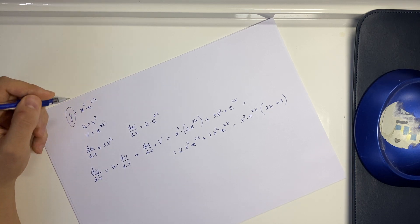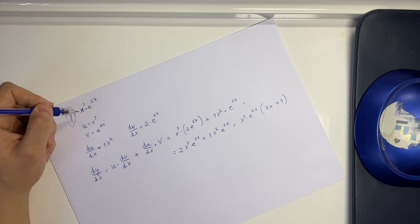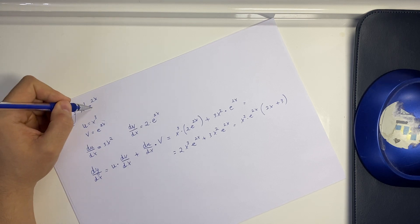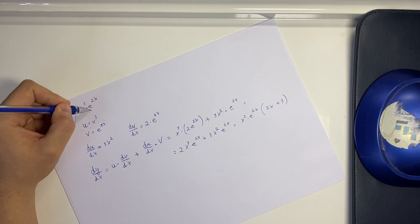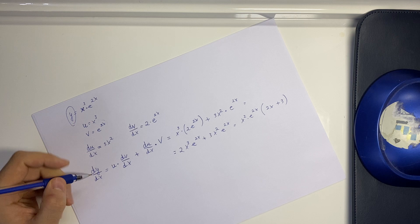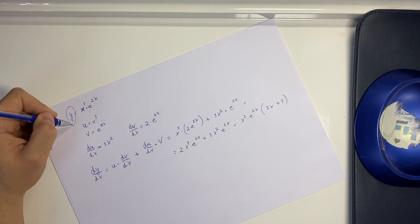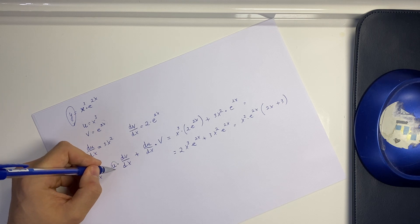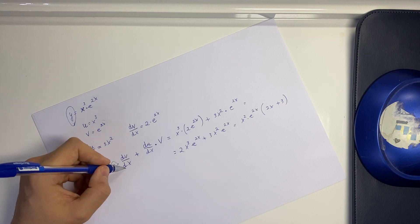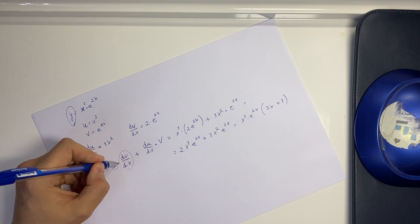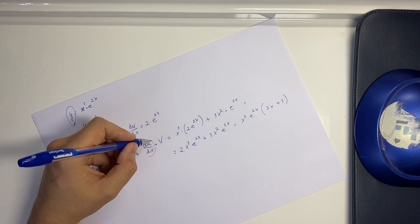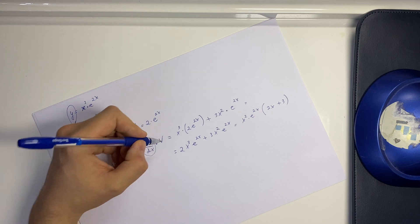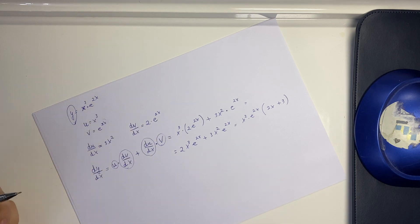We use the product rule when you have two functions multiplied together — in this case x³ and the exponential e^(2x). To find the derived function of y, you take your first function multiplied by the derived second, plus the derived first multiplied by just the second function. And that's it.